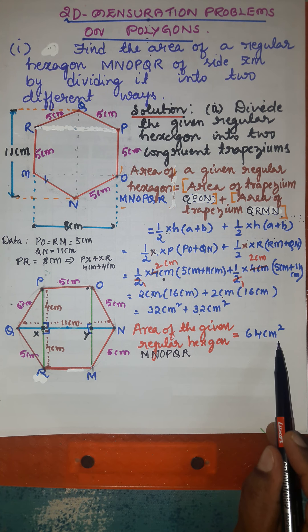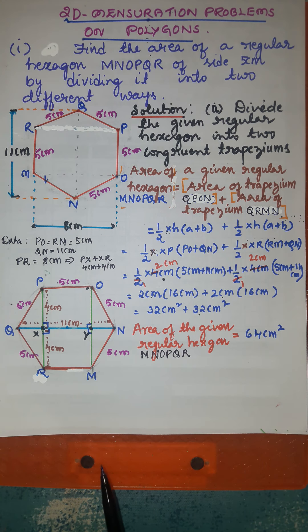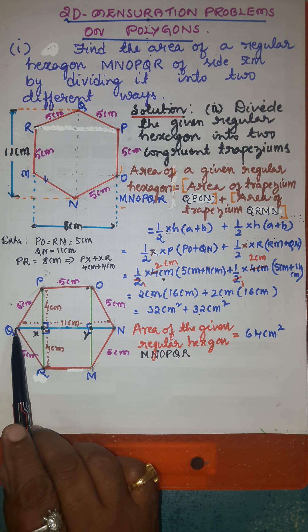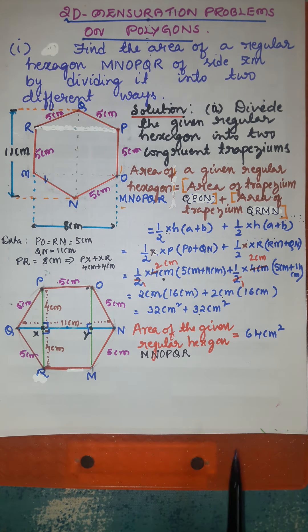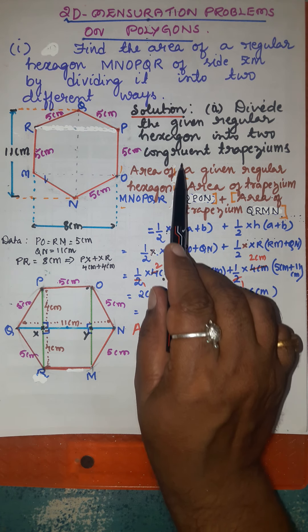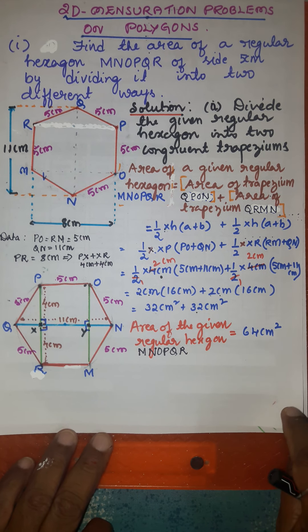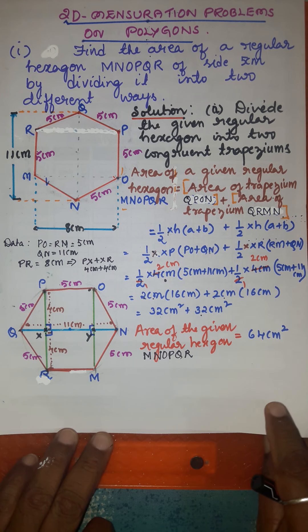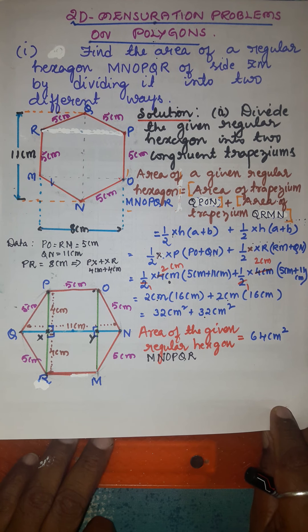We obtained this area by dividing the regular hexagon into two congruent trapeziums by joining line QN. This is one of the ways. They asked us to divide the given regular hexagon into two different ways, so let us now look at the second way of dividing the given regular hexagon.